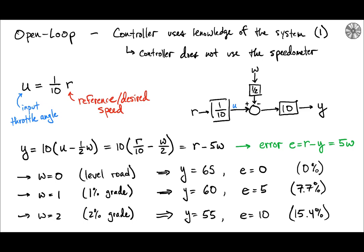What this tells us is that if there is no disturbance, so if there is no road grade, if we're driving on a flat road and there's nothing for the cruise control to do, open loop works just fine. In fact we get perfect performance in the sense that y, our output, is 65 miles an hour exactly what we want it to be.